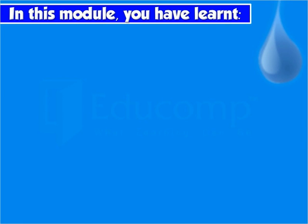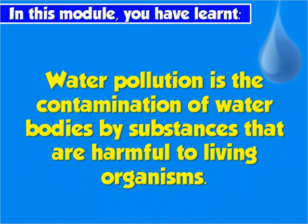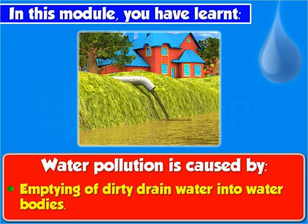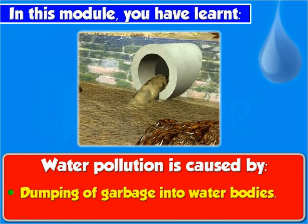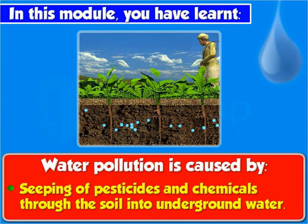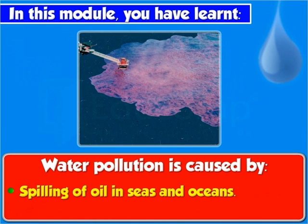The second method is to properly treat waste and chemicals from factories before releasing them into water bodies. In this module you have learnt that water pollution is the contamination of water bodies by substances that are harmful to living organisms. Water pollution is caused by emptying of dirty drained water into water bodies, dumping of garbage, and flowing of industrial wastes into water bodies.